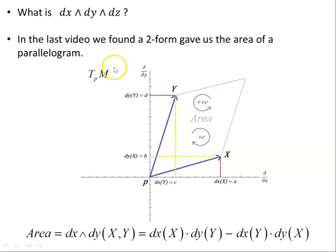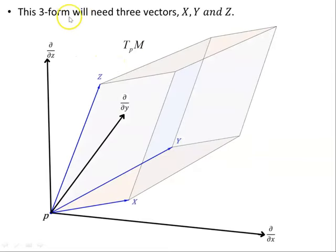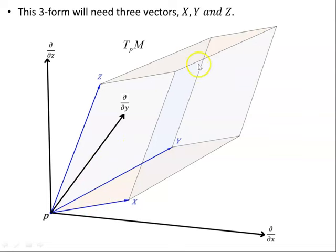In this video we're going to go from two dimensions to three. This three-form will need three vectors x, y, and z. In R3, the three vectors together span a parallelepiped at the point p on the manifold. Just as the two-form gave us the signed value of the area, this three-form is going to give us the signed value of the volume of this parallelepiped in the tangent space to the manifold at point p.